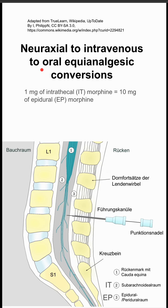Here's an example. For intrathecal morphine, one milligram of intrathecal morphine is equal to about ten milligrams of epidural morphine. Remember that intrathecal morphine is position two right here, right next to the spinal cord, whereas epidural is right outside that sheath, position three.